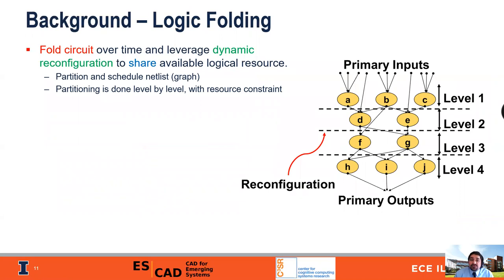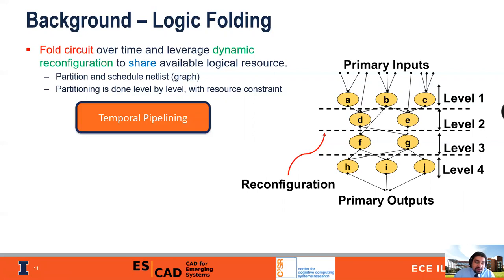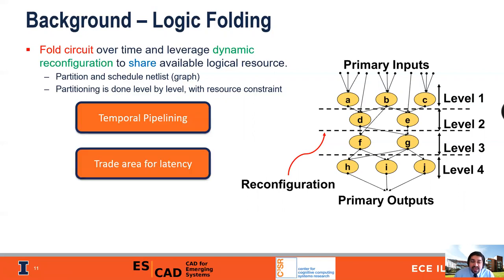A key concept in FreeCache is logic folding. Logic folding folds the circuit over time and leverages dynamic reconfiguration to share available logical resources. For example, consider the netlist on the right-hand side where each node is a lookup table. We've partitioned this into four levels, and on each time step we can implement one level. In time step one, we implement lookup tables A, B, and C, latch the output, reconfigure the physical lookup tables, and then implement lookup tables D and E in the second time step. In doing so, we implement the entire circuit over four time steps but only require three physical lookup tables. This is temporal pipelining — effectively we're trading area for latency.